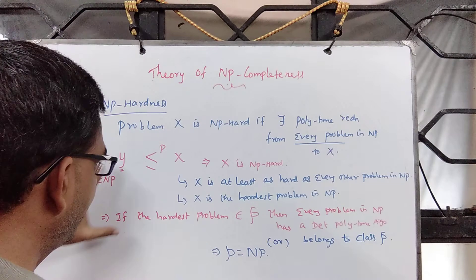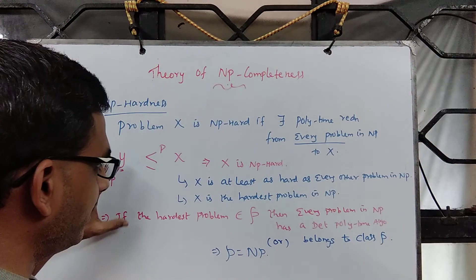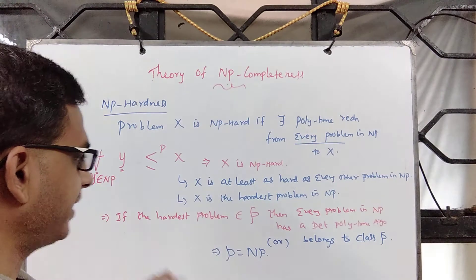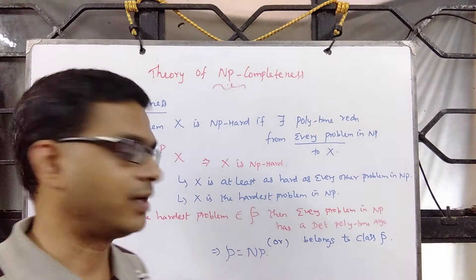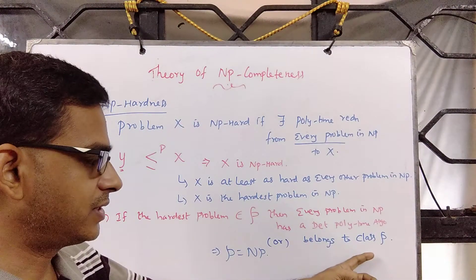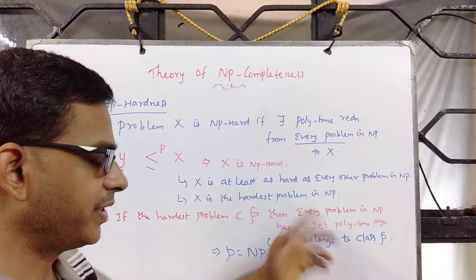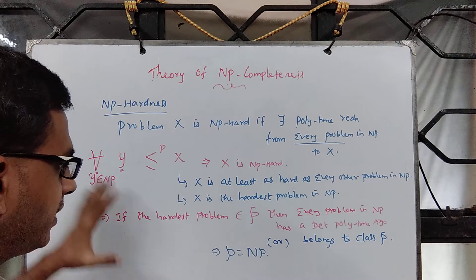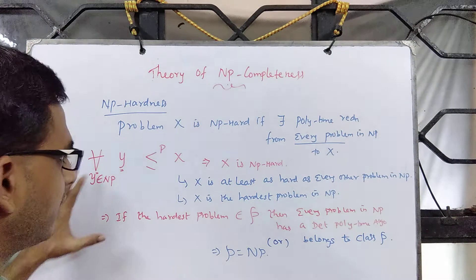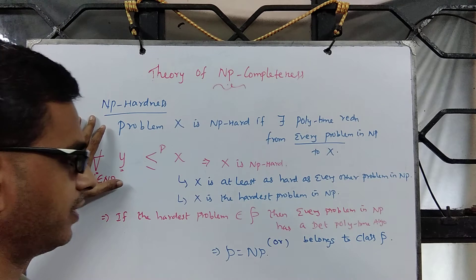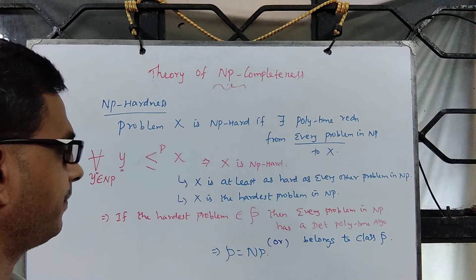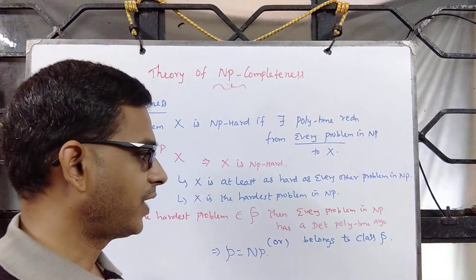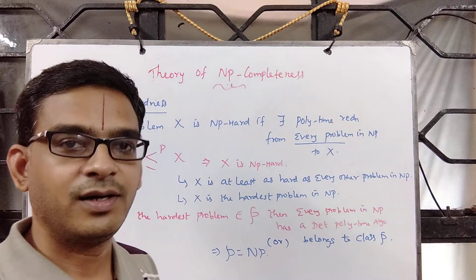Now with this NP-hardness theory, you see that here is the hardest problem — you solve the hardest problem in polynomial time, and every other problem in the set NP becomes class P. To talk about this idea, the theory of NP-hardness was discovered. Now, which is the first NP-hard problem, and how are these problems related? All that we shall see next.